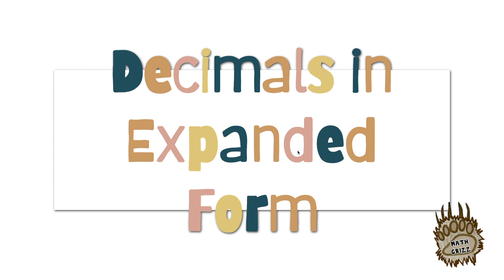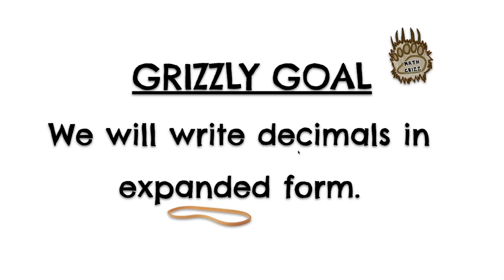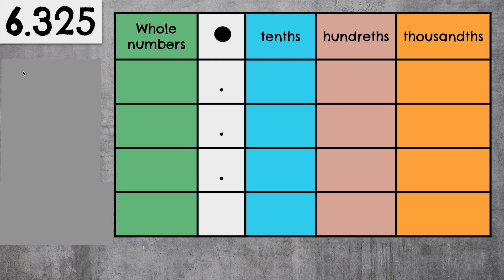Welcome back, Math Grizz! Today, we will write decimals in expanded form. We have the decimal 6 and 325 thousandths, or we can say 6.325.